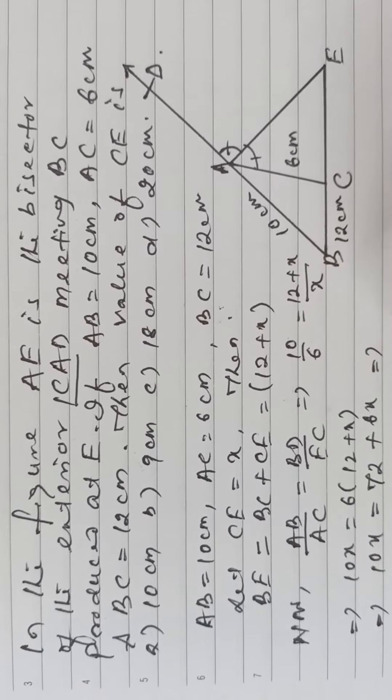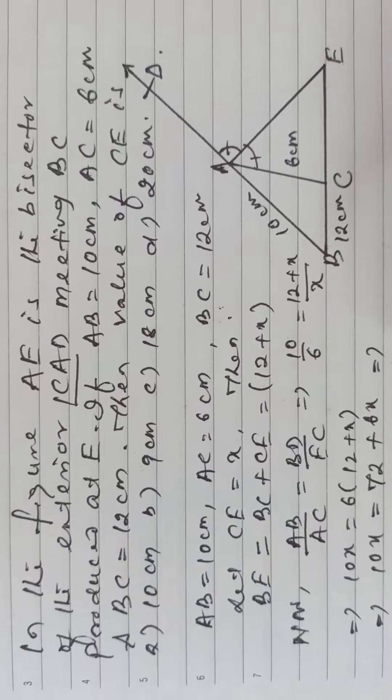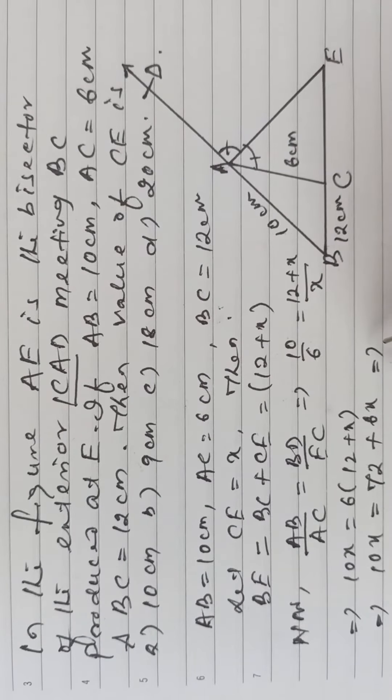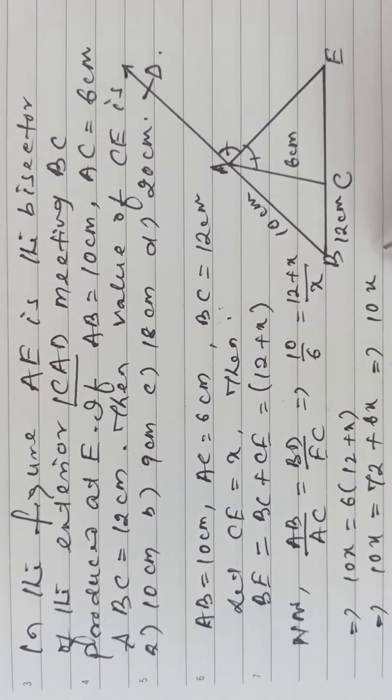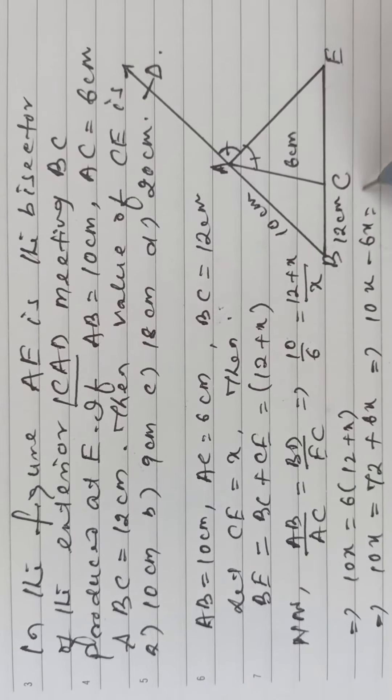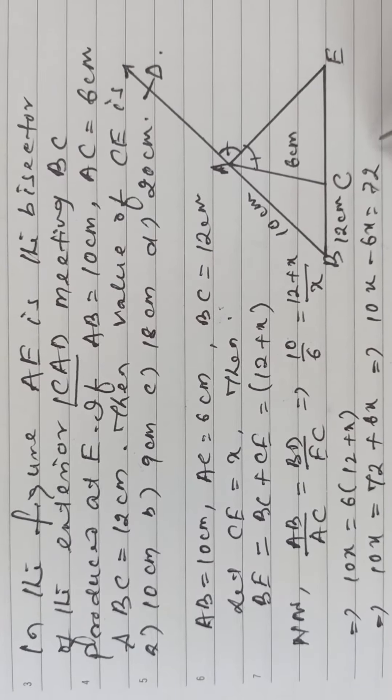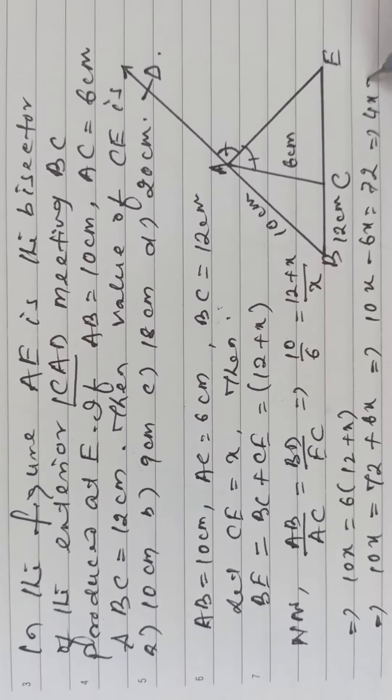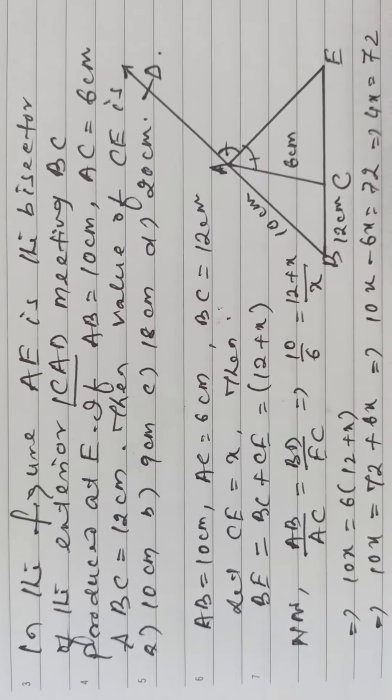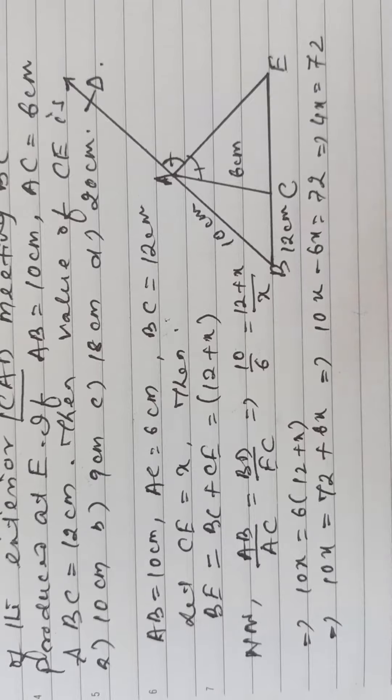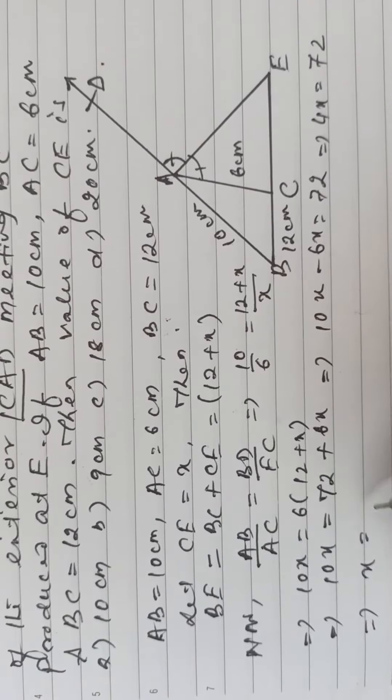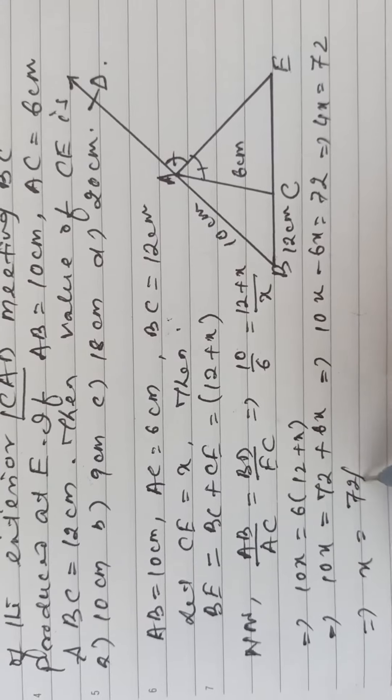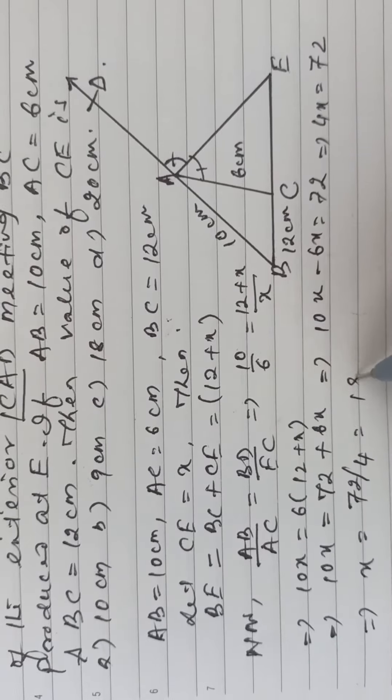Then 10X minus 6X is equal to 72, 4X is equal to 72. Now X is equal to 72 by 4, that is 18.